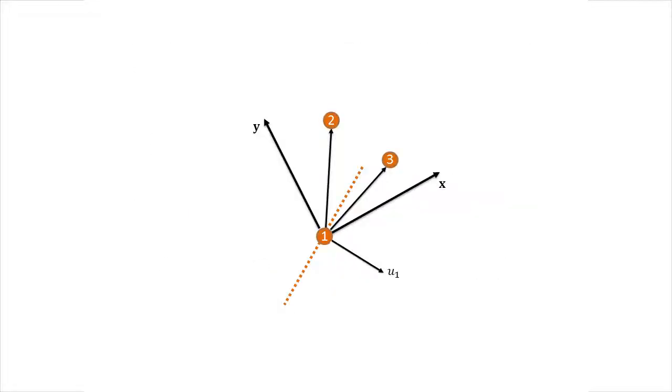This design enjoys a robustness property, where if agents move in the desired direction perturbed by a rotation up to 90 degrees, convergence to the desired formation is still guaranteed.